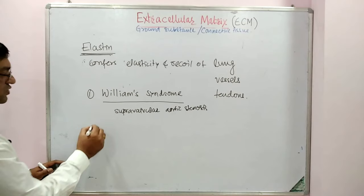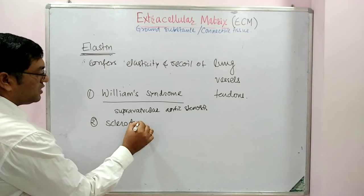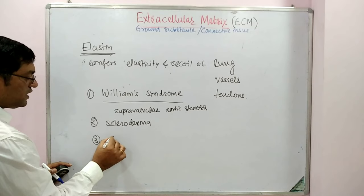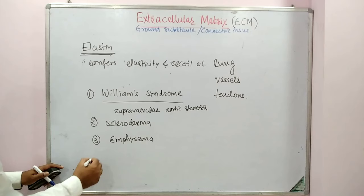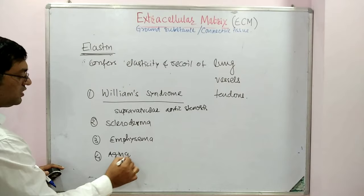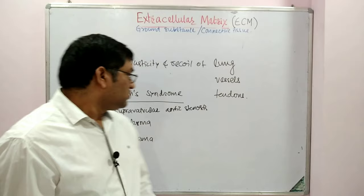The second disease related with elastin is scleroderma — in scleroderma there is increased elastin. The third is pulmonary emphysema — there is decreased elastin or increased degradation of elastin. The fourth is aging — decreased levels of elastin are found in older age.